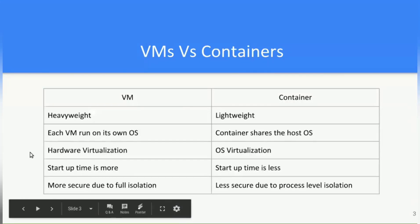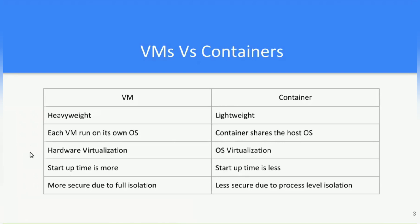Let's do the point-to-point difference between virtual machine and a docker container. Virtual machine is heavyweight in nature because it requires its own operating system, whereas docker containers are lightweight as they share the host operating system. In case of virtual machine, hardware is virtualized, but in case of docker container, only the operating system is virtualized.